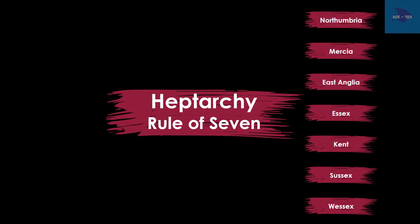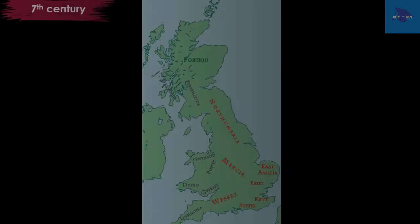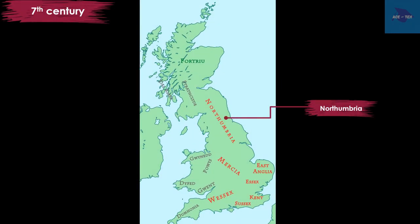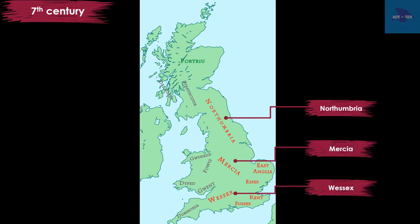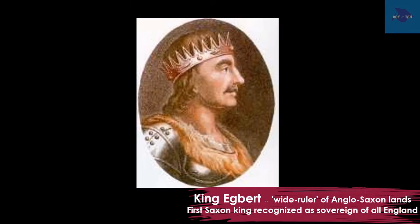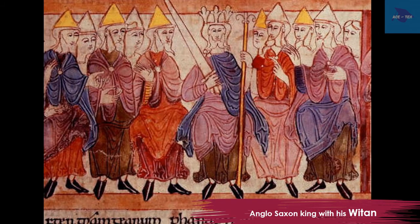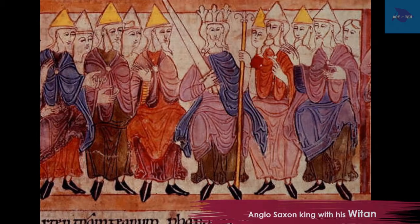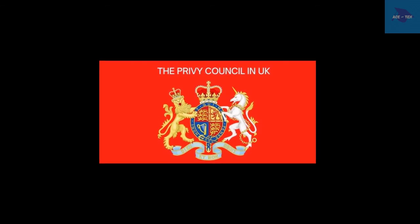These kingdoms fought against each other for supremacy. By the middle of the 7th century, the three largest kingdoms were Northumbria, Mercia and Wessex. King Egbert of Wessex, who established the supremacy of his kingdom, is considered the first king of England. The Saxons created institutions that made the English strong for the next 500 years. They formed the king's council called the Witan. The system continues even today in the name of Privy Council — a group of advisors on the affairs of the state.